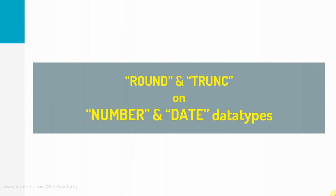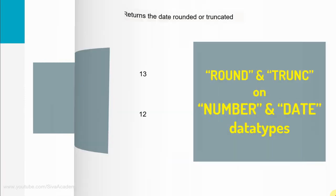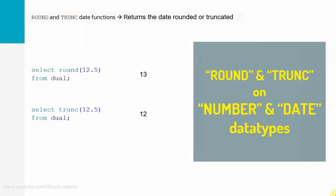I am going to cover the usage of ROUND and TRUNC for both number and date data types, because this is an overloaded function which will behave differently based on the type of input you are passing. If you are passing input as a number, it will truncate or round that number. If you pass the input as a date value, then it will do the truncation or rounding based on the time or based on the next parameter we are passing. Let us start with understanding the very basic difference between ROUND and TRUNC.